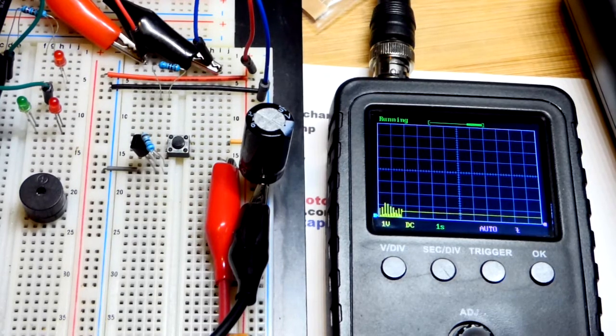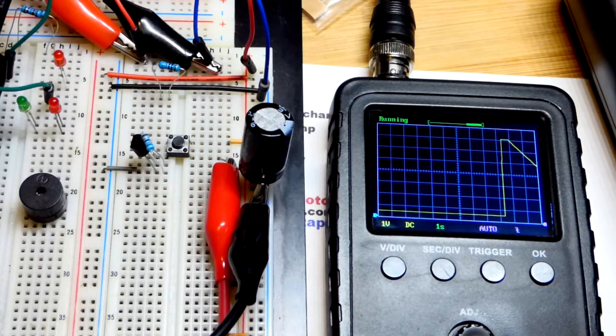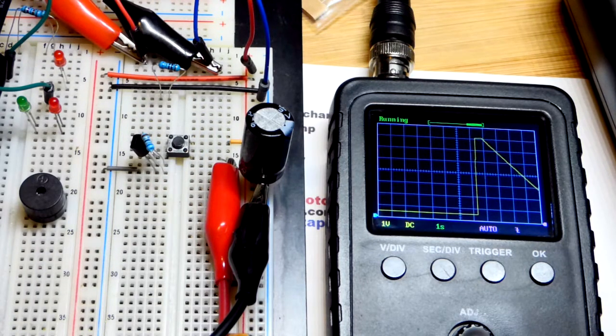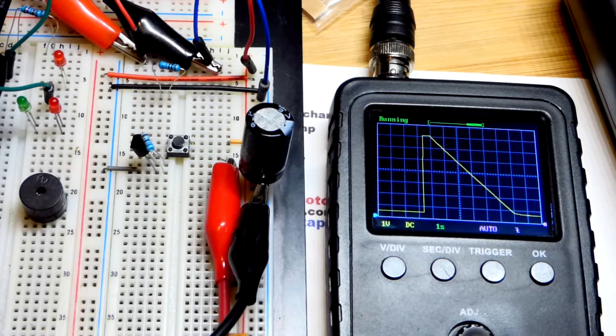But that's it for the circuit. We saw the ramp going down. It instantly goes up thanks to the switch and goes down at a steady rate because it's a steady current and it's a fixed capacitance.